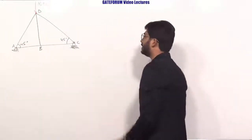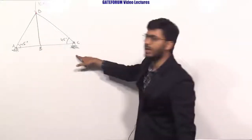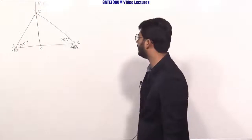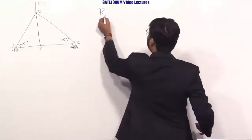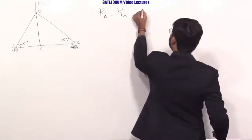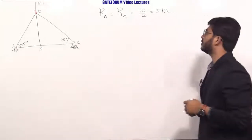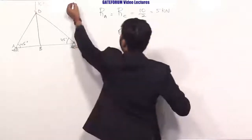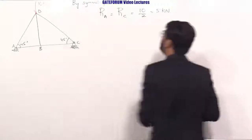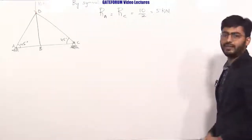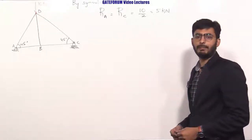By seeing the problem, we can say that this 10 kilo-newtons is symmetrically loaded at points A and C. Using the rule of symmetry, reaction R_A and R_C each equal 10/2 = 5 kilo-newtons. He is asking to calculate the force in member BC.